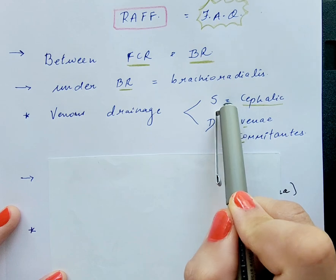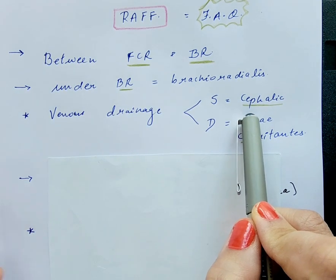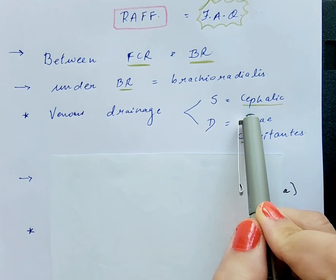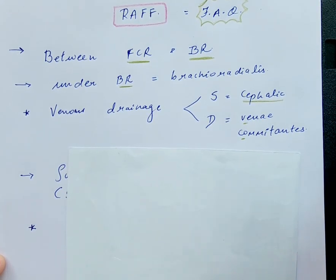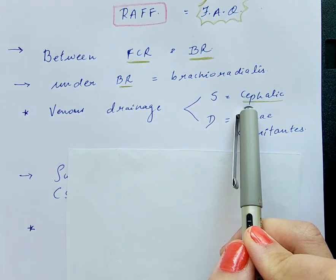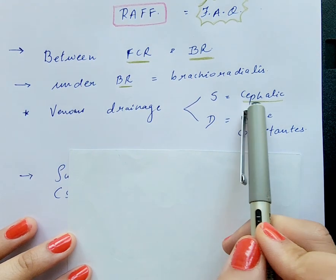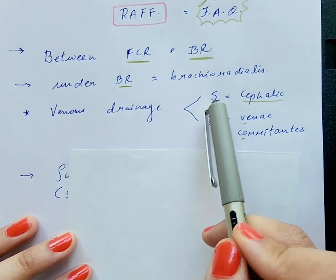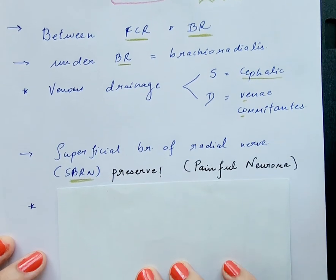The cephalic vein is harvested in almost all cases because it helps to increase or supplement the venous drainage of this flap, as the vena comitants may not always be sufficient. However, if the patient has been pricked multiple times for inserting a venous catheter or for taking blood samples, this cephalic vein might be injured, so a good pre-operative assessment is required.